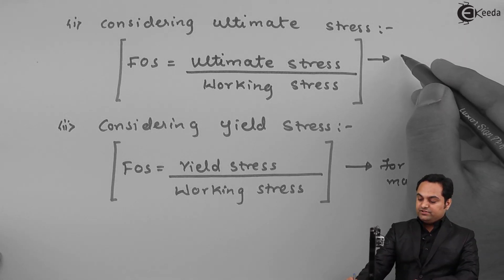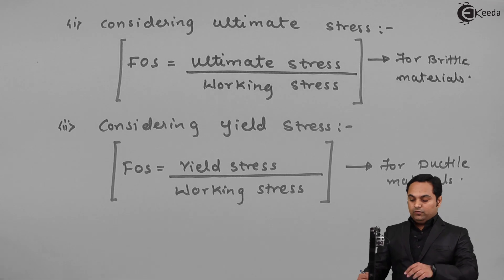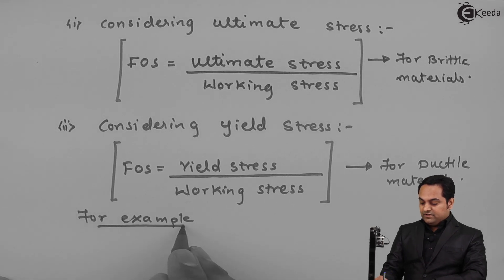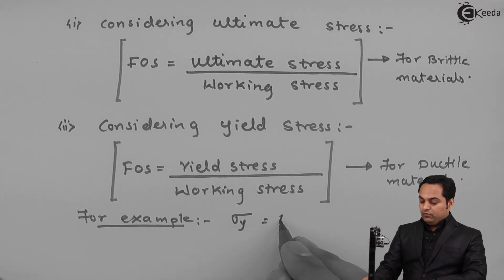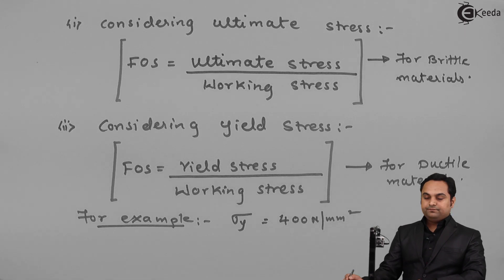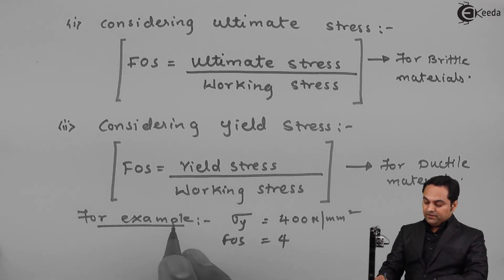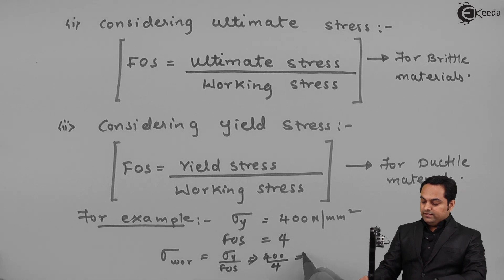Whereas ultimate stress upon working stress is used for brittle materials. For example, if yield stress, denoted as Sigma Y, is equal to 400 Newton per mm² and the factor of safety is 4, then working stress equals yield stress divided by factor of safety, which is 400 divided by 4.